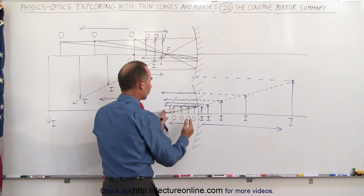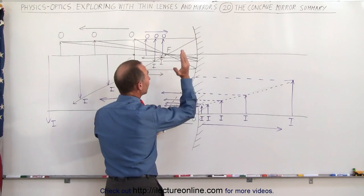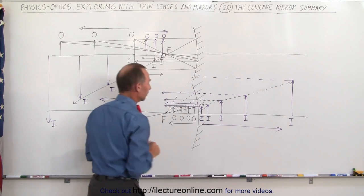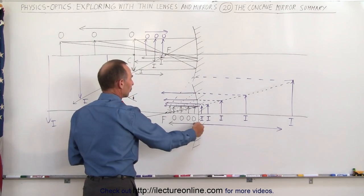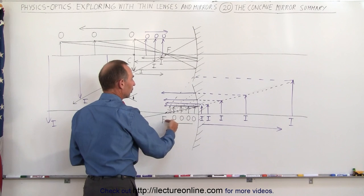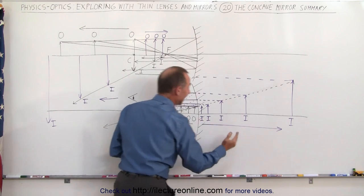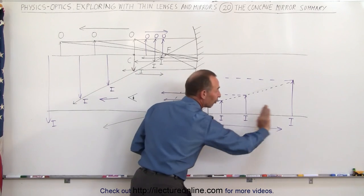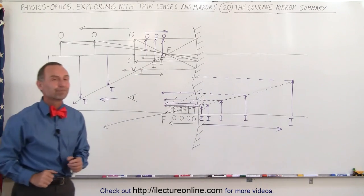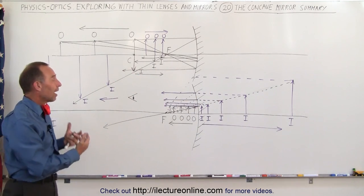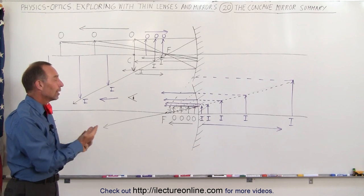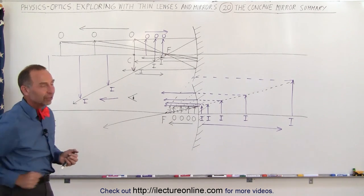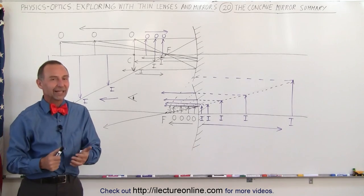When the object is between the focal point and the mirror of a concave mirror, the image will be virtual. Again, as you move closer to the focal point, the image will move farther away. In the limit, as the object reaches the focal point, the image will form at infinity. So now you have a good idea of how to form images when you place the object at any position in front of the concave mirror. And that's how it's done.